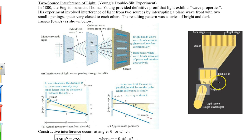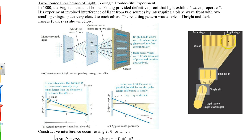Thomas Young performed an experiment using monochromatic light — single color — which was directed to one single slit and then through two very closely spaced slits. On the screen, bright and dark fringes were observed all along it. The bright fringes resulted from light waves from both holes arriving in phase, producing constructive interference. The dark fringes were due to light from the two sources meeting out of phase, producing destructive interference — no light. This convincingly showed scientists that light has wave-like properties.